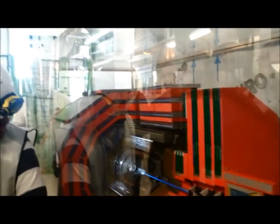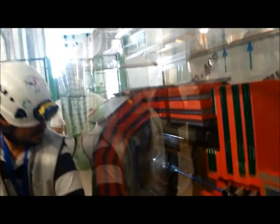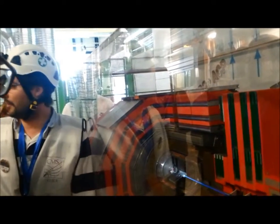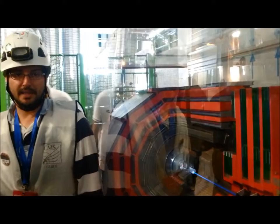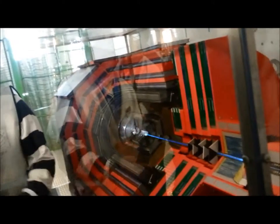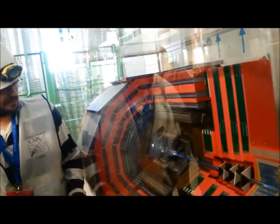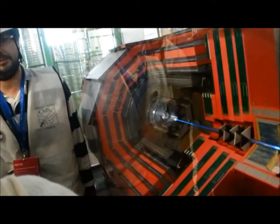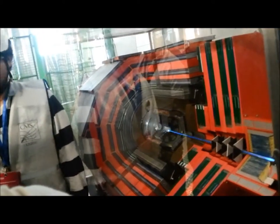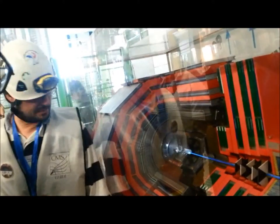Then we have the hadronic calorimeter. We have the barrel and then the end cap. It is made of brass and scintillator. We melted the brass from 1 million empty shells from the Russian Army from the Second World War. We have brass, scintillator, brass, scintillator. The hadrons interact with the brass, we sample the electromagnetic shower with the scintillators. We make this sandwich of the two layers for most of the components.